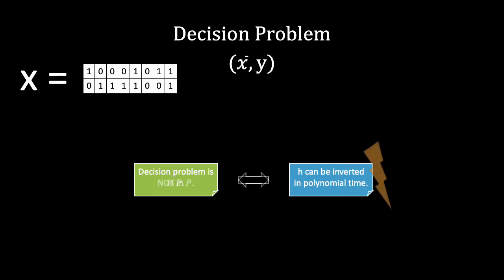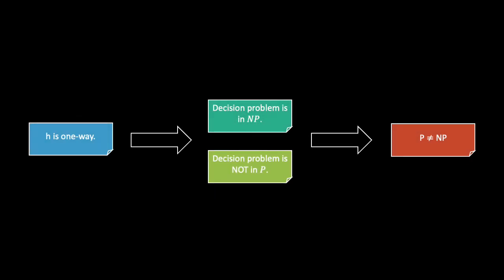However, we initially assumed that the hash function was one-way, and we thus reach a contradiction, proving that this decision problem is not in P. Thus we have found a decision problem that is in NP but not in P, meaning that P is not equal to NP.